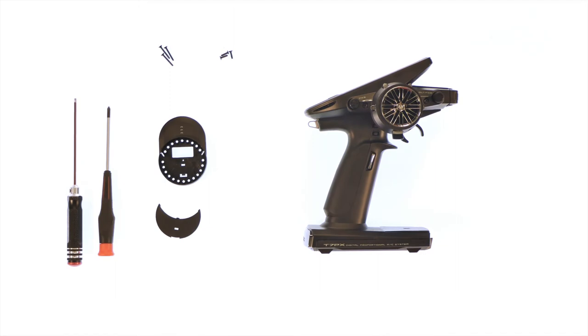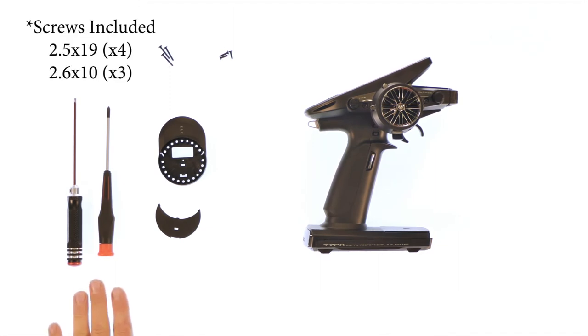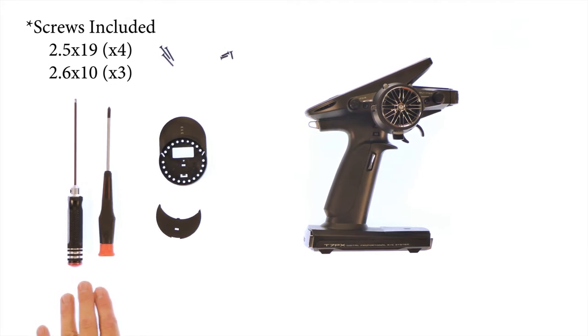Now I'll show you how easy it is to install the drop-down on your 7PX radio. You'll need two tools to do this: a 2.5 millimeter wrench and a Phillips screwdriver.